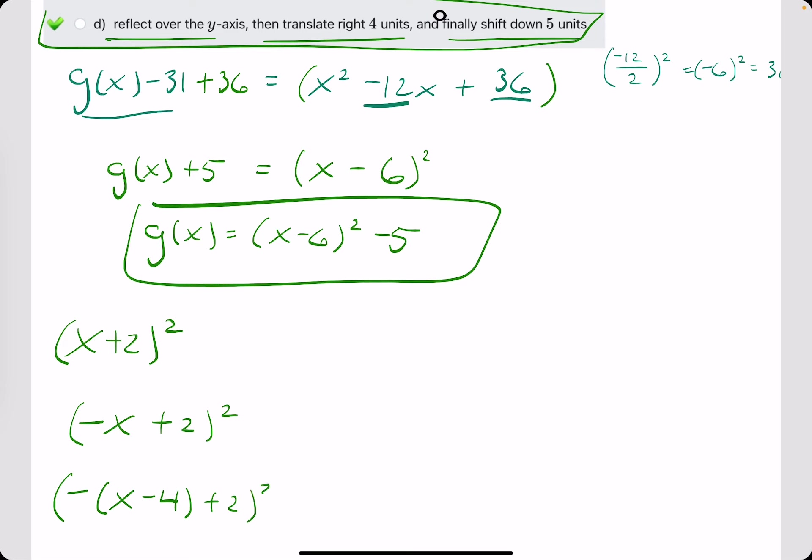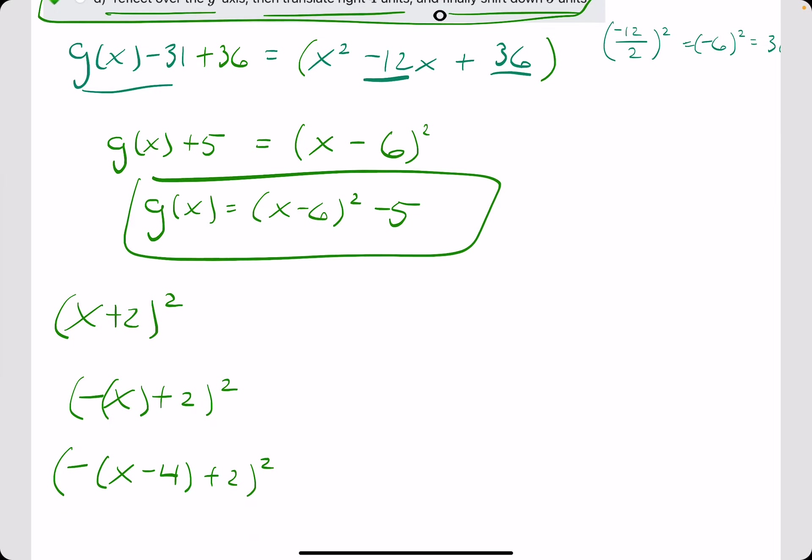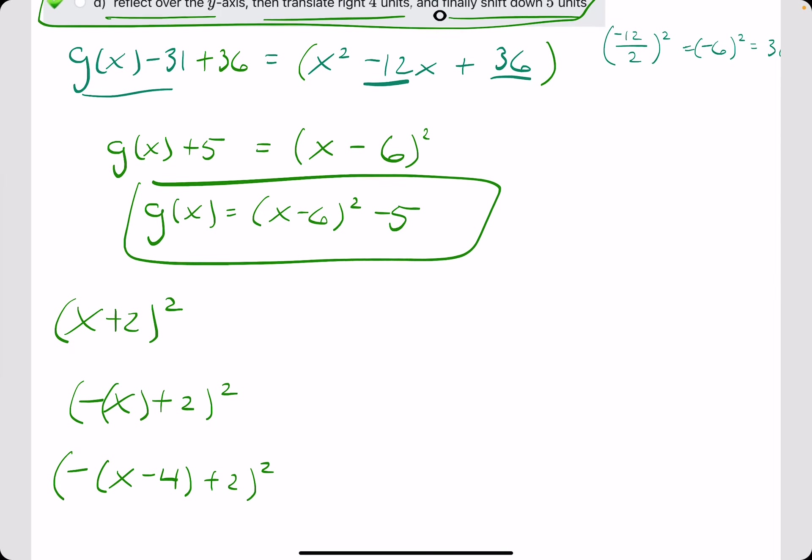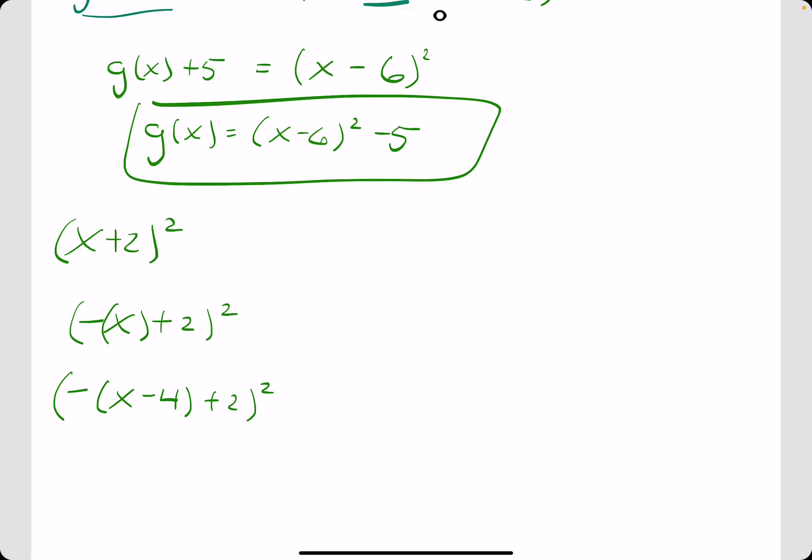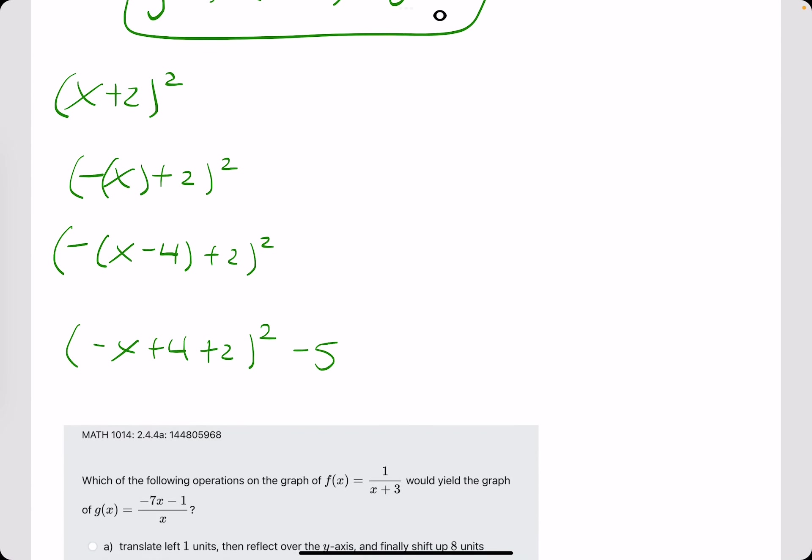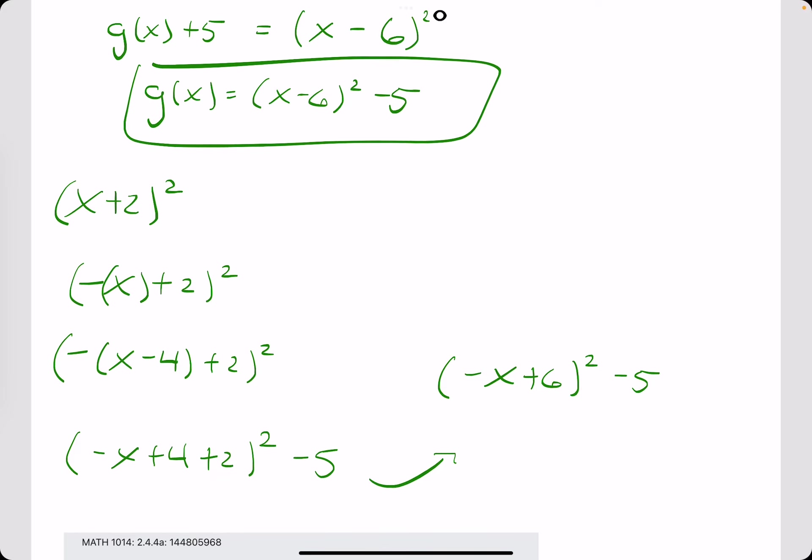So we substitute x minus 4 in place of the x that was originally there, right? So now we have negative (x minus 4) and then plus 2. And then finally shift down 5 units. So I'm going to simplify what we have on the inside here. We have negative x plus 4 plus 2 squared, and then we said shift down 5 units, so we would subtract 5. Now let's simplify what's on the inside of the parentheses real quick. We have negative x plus 6 squared minus 5.